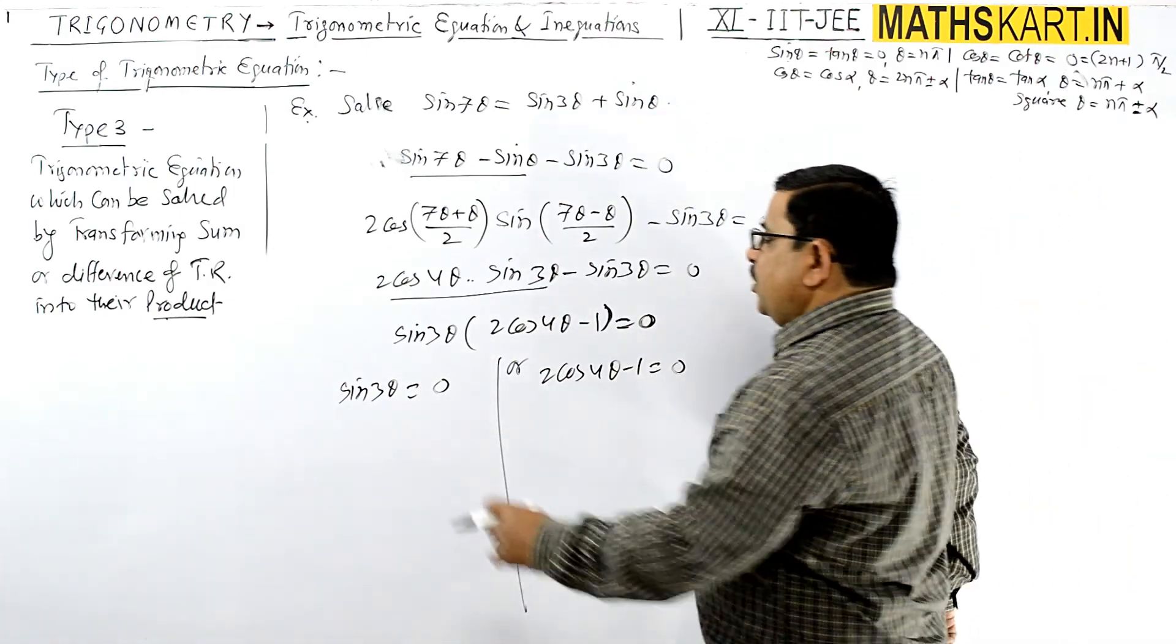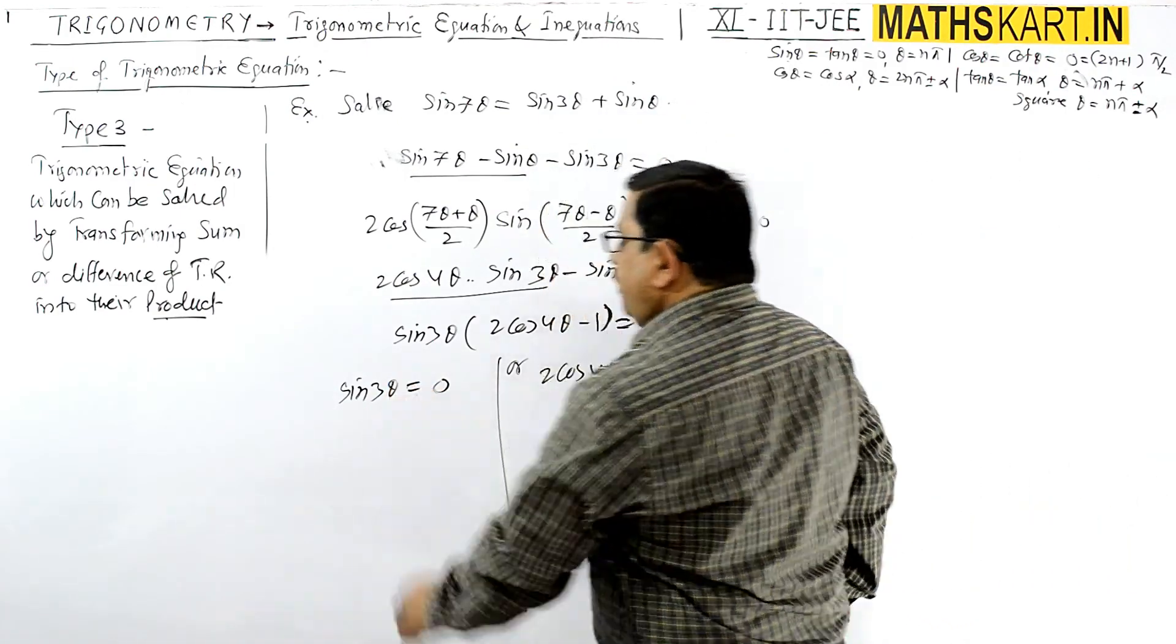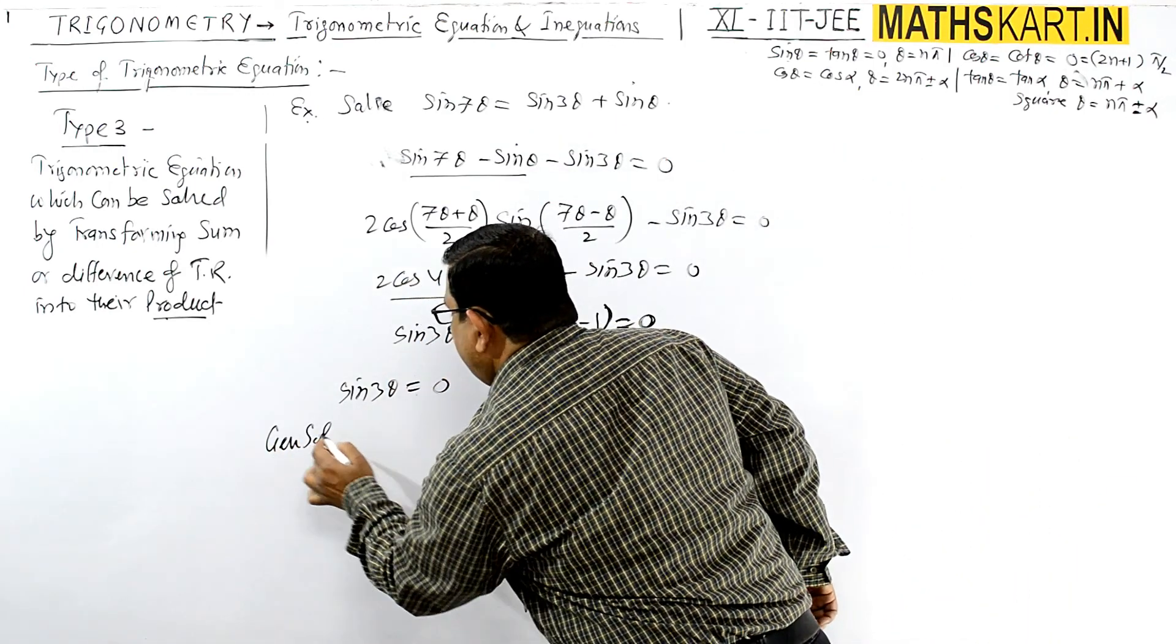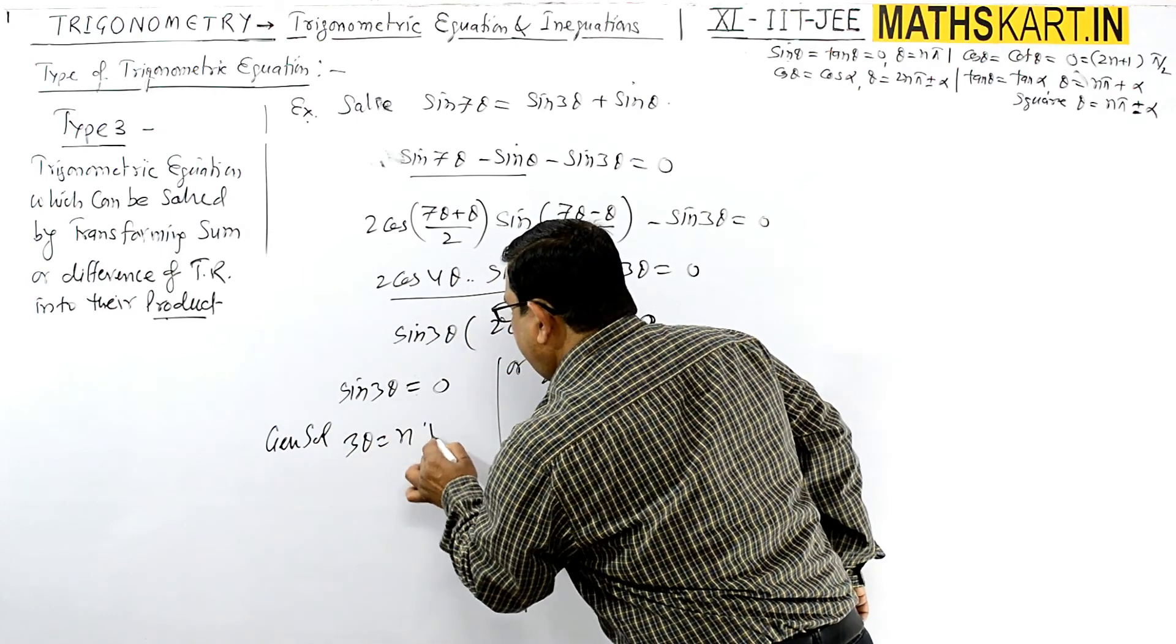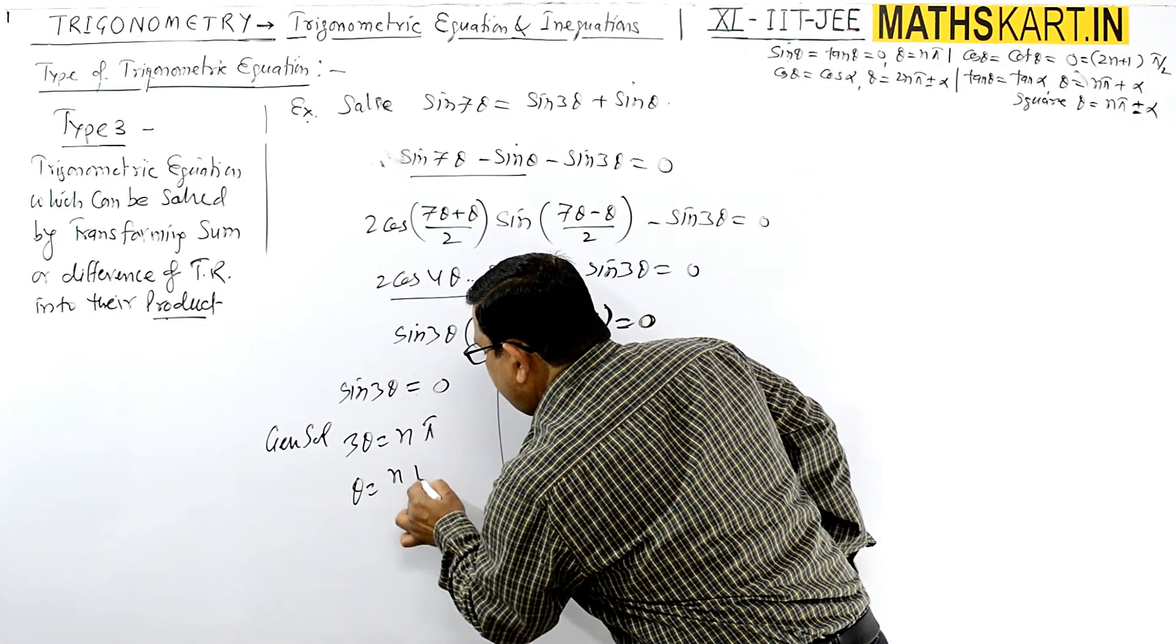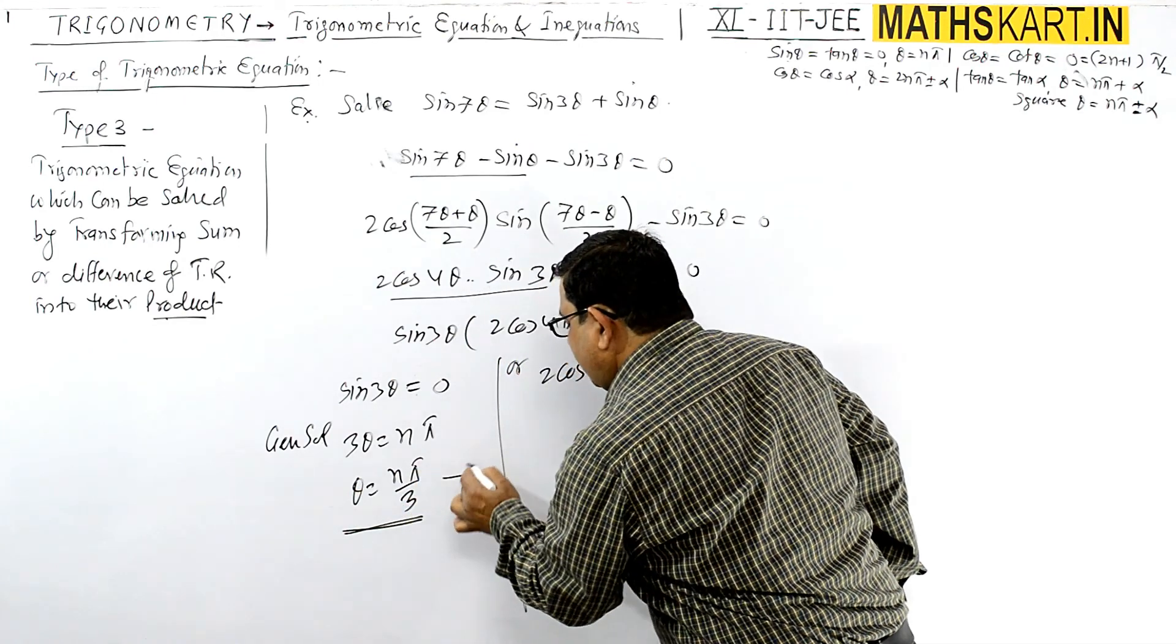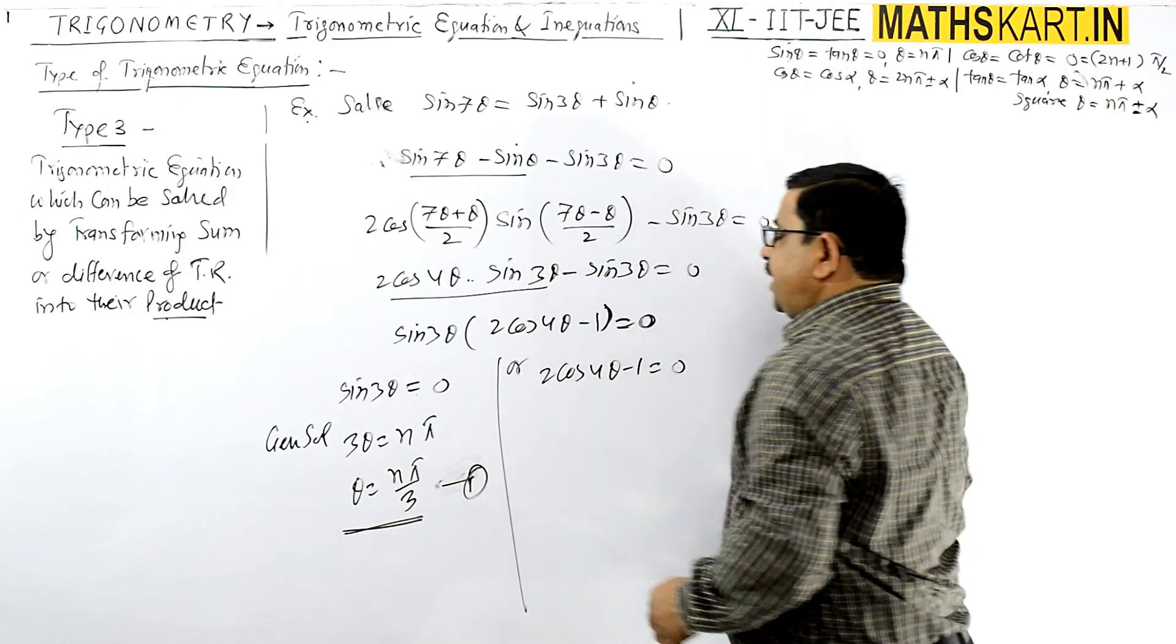So you can write the first factor: sin 3θ = 0. If sin θ = 0, then θ = nπ. So the general solution is 3θ = nπ, or θ = nπ/3. So one solution is θ = nπ/3.